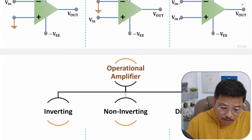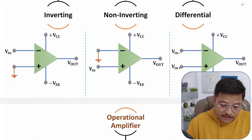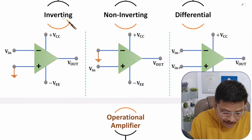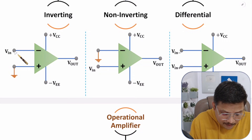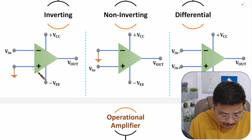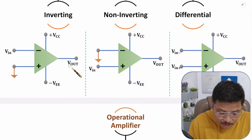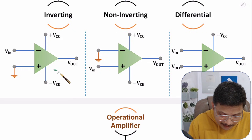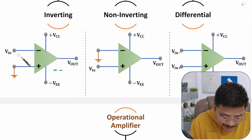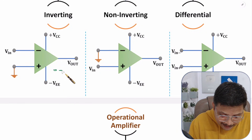In inverting configuration, input is given to the inverting terminal — the negative terminal — and the non-inverting terminal is grounded. So the output voltage will be negative: output equals negative differential gain AD times input VIN.